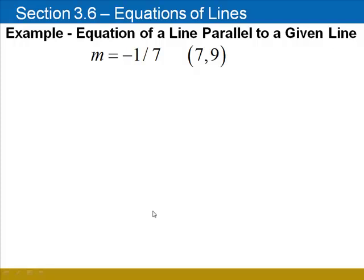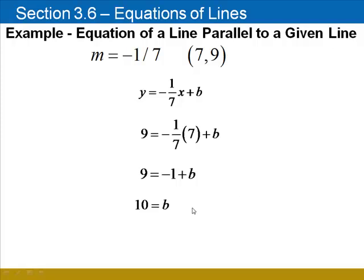We're going to use the y equals mx plus b form, substituting negative 1 seventh for m, 7 for x, and 9 for y. Insert negative 1 seventh in place of the slope. Now, we'll put in 9 for y and 7 for x. Negative 1 seventh times 7 is negative 1, and we finish by adding 1 to both sides. We find that b is equal to 10.